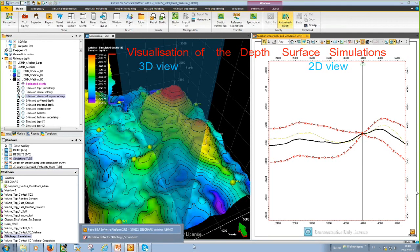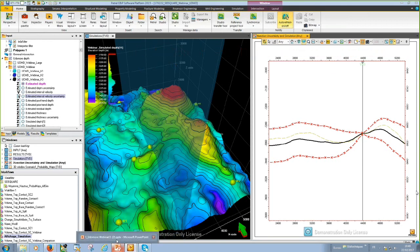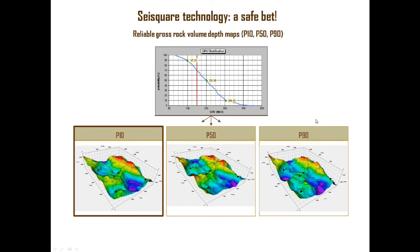Let's see results of the gross rock volume computations. Pay attention. Remember this moment. There are maps of P10, P50 and P90. These maps are not just in between. These maps really integrate all sources of uncertainties. And they rely on objective criteria.